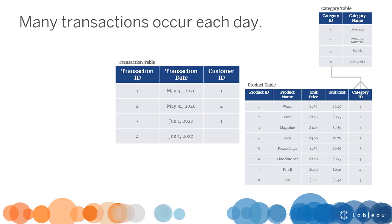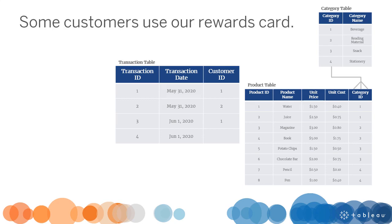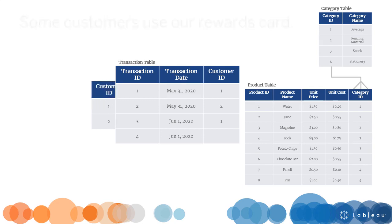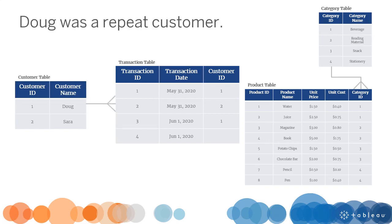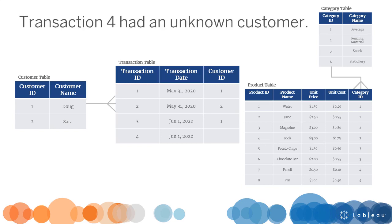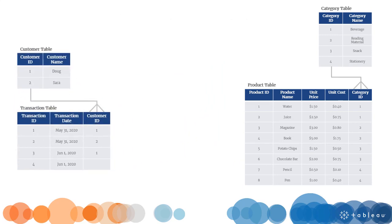Many transactions occur each day, and each transaction has a unique transaction ID. Some customers use our reward card system during a transaction, which provides us with a partial list of customers. Doug was a repeat customer in transactions one and three. Transaction four had an unknown customer. There is a one-to-many relationship between the customer table and the transaction table. The two tables relate based on a common field, customer ID.